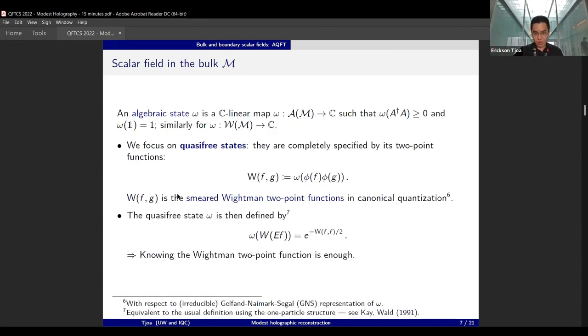As we do in quantum mechanics, to define a theory we need the observables and the state. An algebraic state is a C-linear map from the algebra of observables to the complex numbers which spits out expectation values. We require them to spit out positive numbers for positive operators and it's normalized to unity.